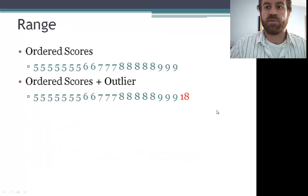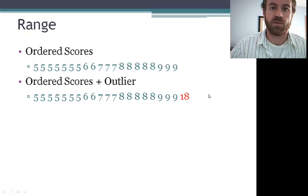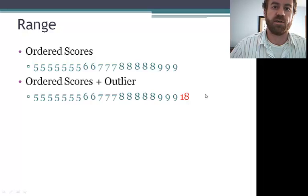So if you use our previous example of digit span forwards, the range in the first case is 4. 9 minus 5 is 4. The range when we include the outlier is 13. 18 minus 5 is 13. So in measures of variation, the range is most affected by outliers.